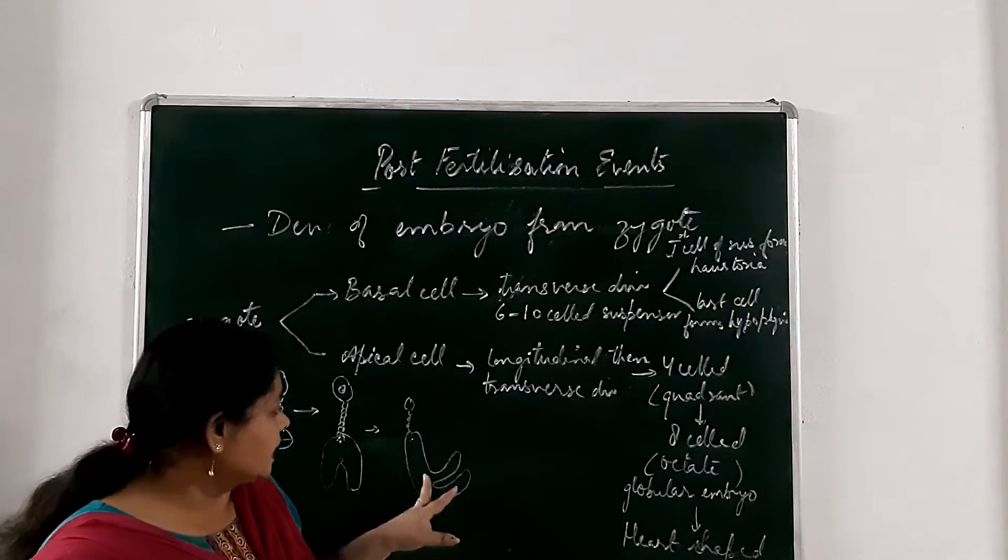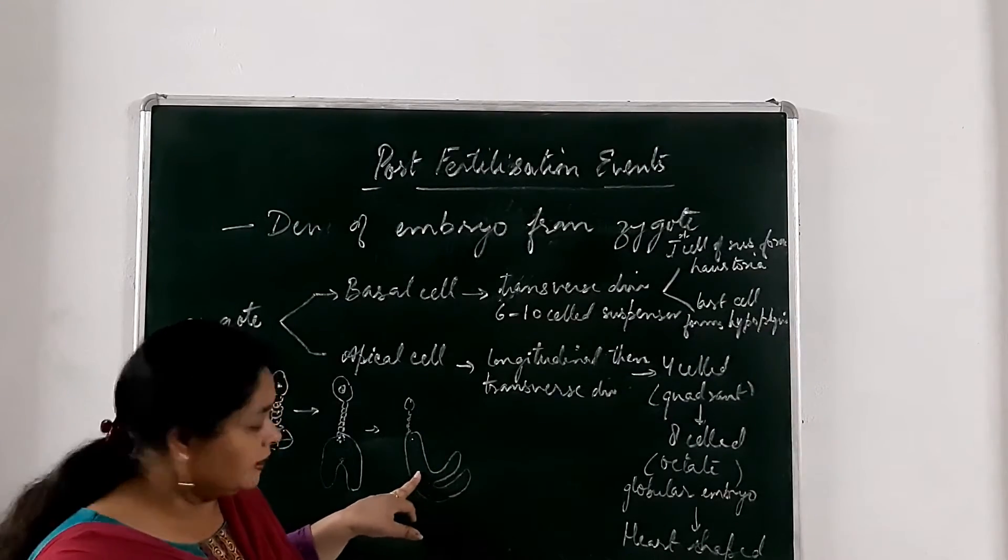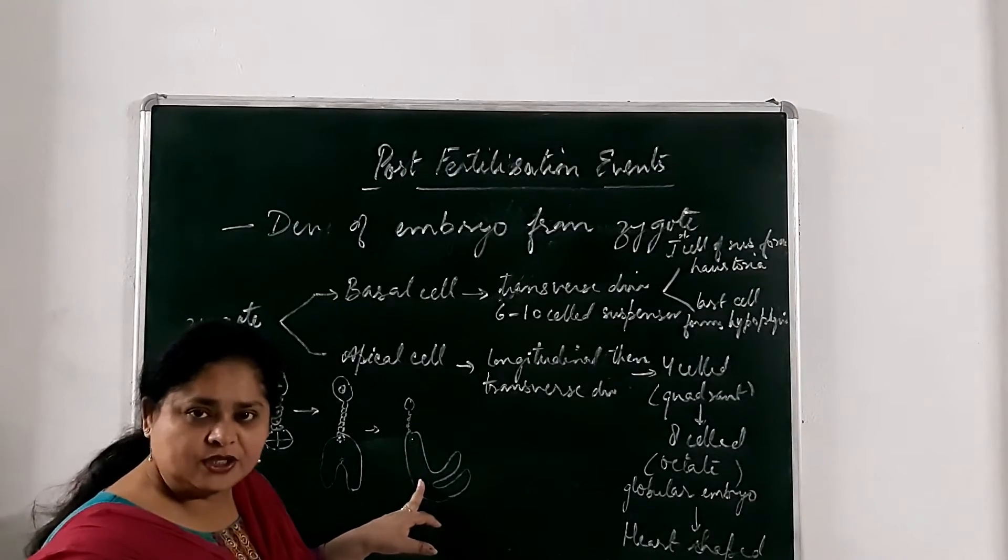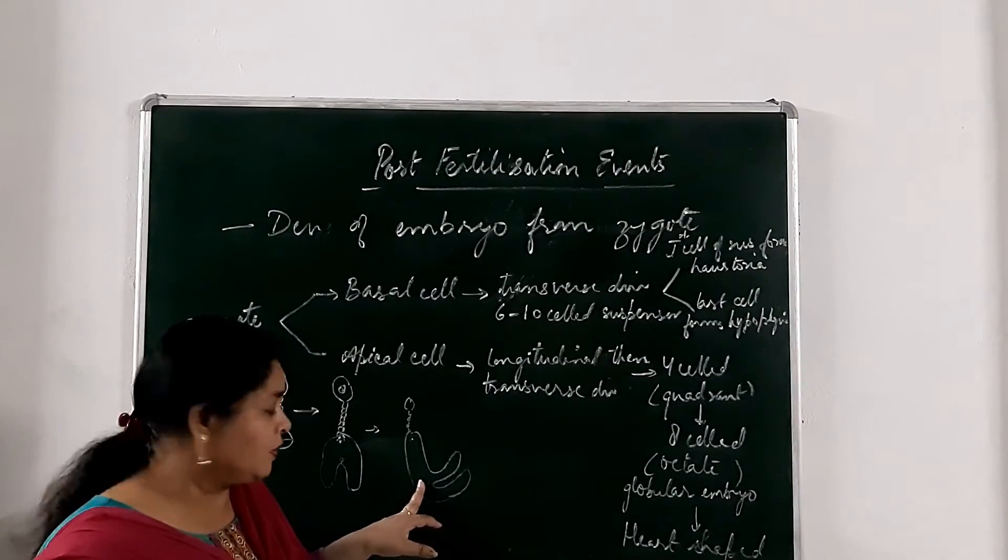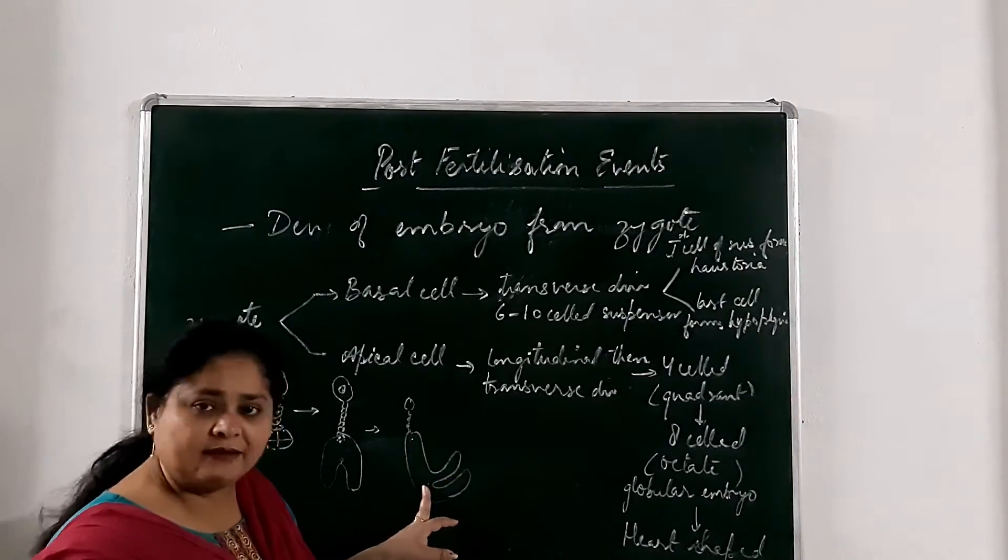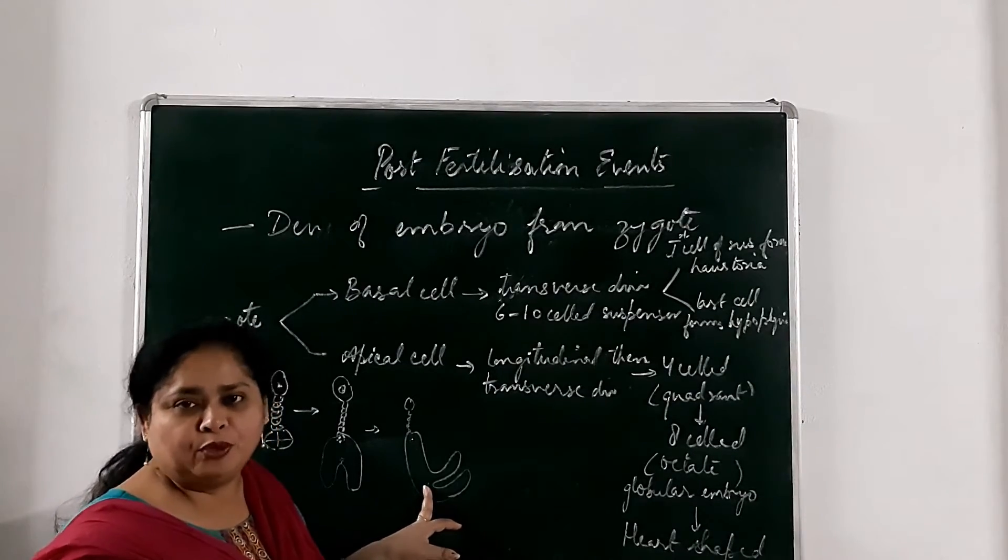So now the embryonal axis is here. The region which is the portion of the embryo which is above the level of the cotyledons is known as plumule.